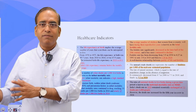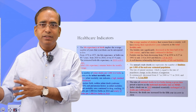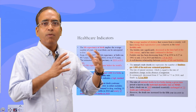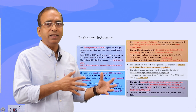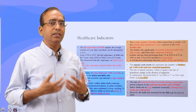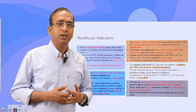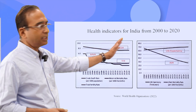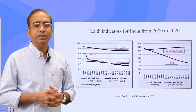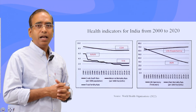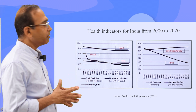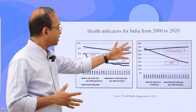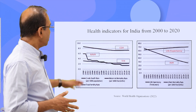We are having health indicators and also government spending, and with the spending, what is the change in the health indicators — that is what we try to understand. This diagram gives us an idea of how these indicators have changed over the period.